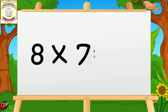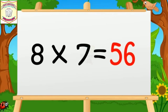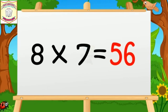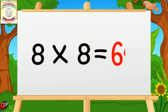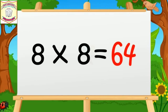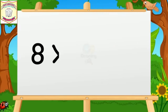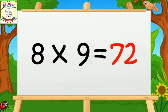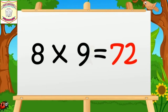Eight sevens are fifty-six. Eight eights are sixty-four. Eight nines are seventy-two.